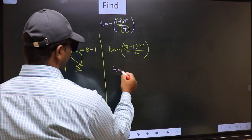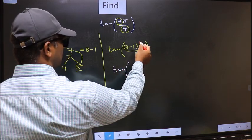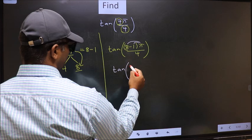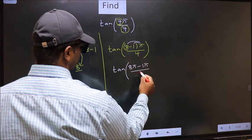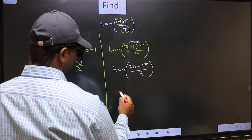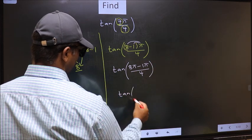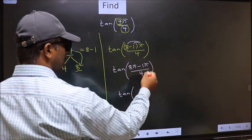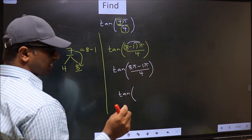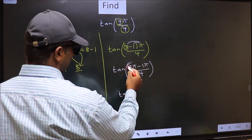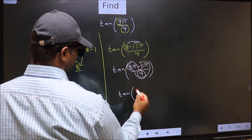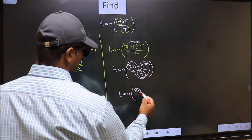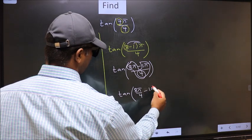Tan. Now you should open the brackets. We get 8π minus 1π by 4. Now tan. Over here you should split the denominator in this way. That is 8π/4 minus 1π/4.